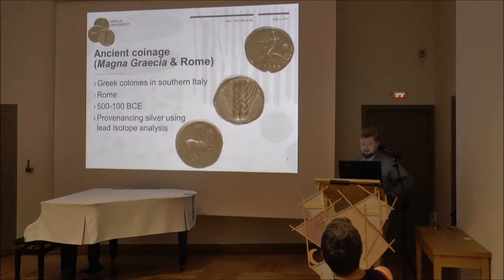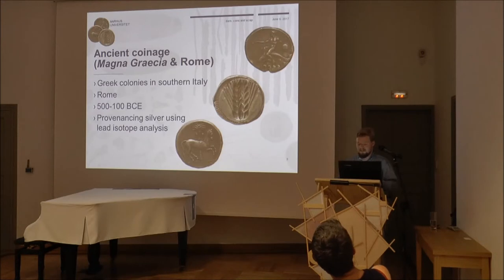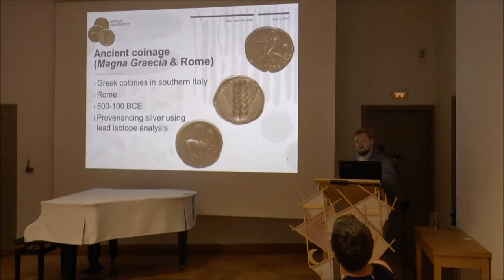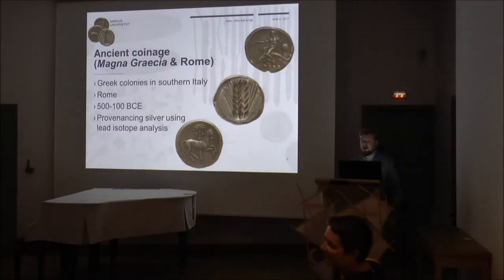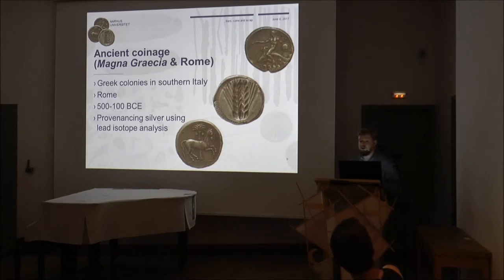The first case study is work I did previously for two and a half years looking at silver — some of the earliest silver used for the Greek colonies in southern Italy and also Rome. What we were asking is: what is the silver made of? Is it pure silver? Where does the silver come from? And how does this change through time? What we actually did was something called lead isotope analysis.